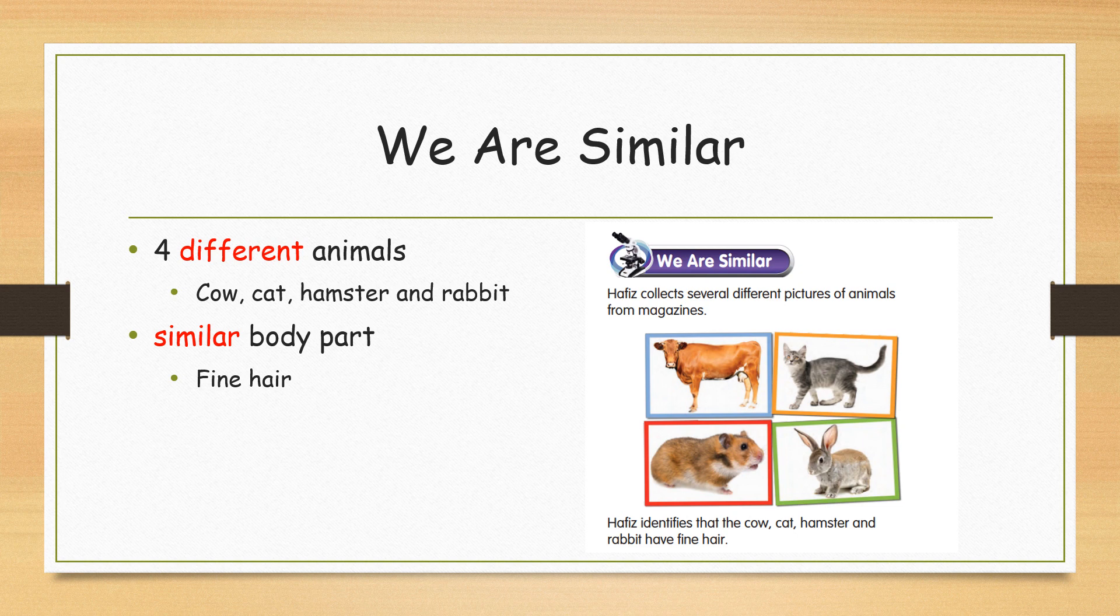There are 4 different animals here: cow, cat, hamster and rabbit. What is their similar body parts? The cow, cat, hamster and rabbit have fine hair. Their similar body part is fine hair.